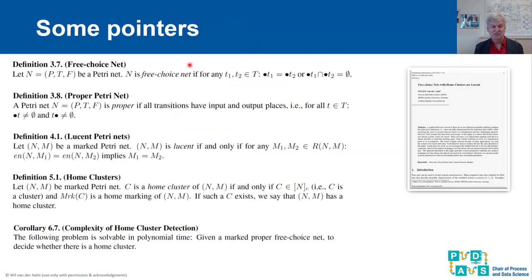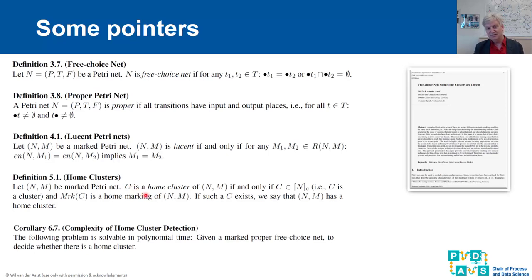Let me walk through some definitions of the paper. We focus on free choice nets and ensure they are proper. Lucency is formally defined: if two reachable markings enable the same set of transitions, they must be exactly the same marking. Here is the formal definition of a home cluster: C is a home cluster if and only if we can always return to a marking just marking the places in that cluster. If a net has such a home cluster, is proper, and is free choice, then it is lucent. Checking whether there is a home cluster can be solved in polynomial time.